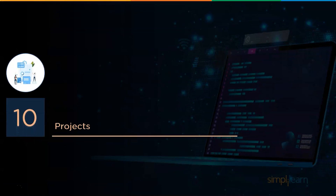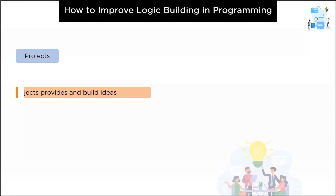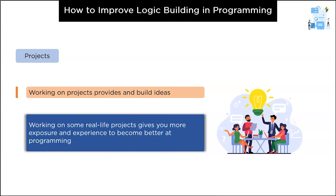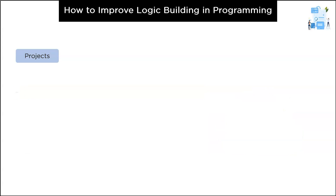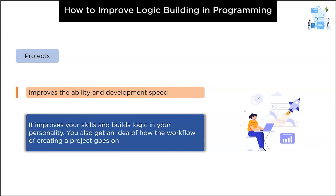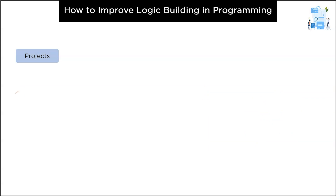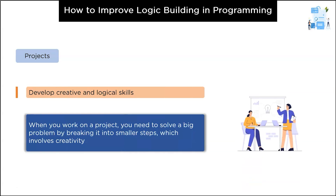The last stage is stage ten: projects. Working on projects provides and helps you build ideas. One of the most important things a beginner or experienced person should do to get better at programming logic is to work on projects. Working on real-life projects will give you exposure and experience. You can make any small application, or if you are experienced, build complex projects. When you work on a project, you solve a big problem by breaking it into smaller steps, which improves logic building skills and creativity levels.